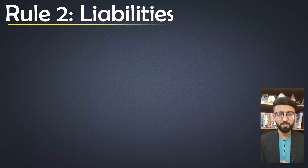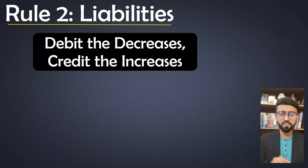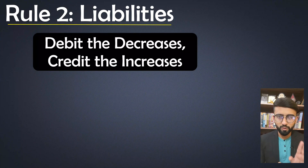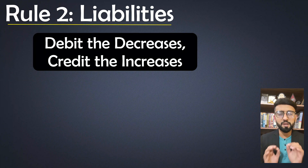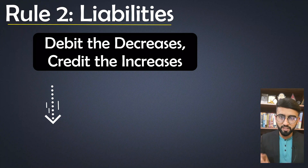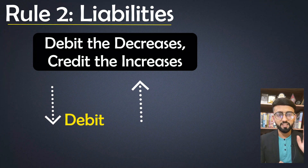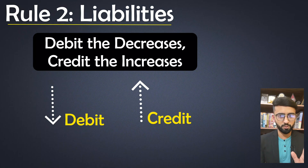Now let's move to the second rule, which is for liabilities. The rule for liabilities is: debit the decreases and credit the increases — exactly opposite to the assets rule. So whenever liabilities decrease, they are debited, and whenever they increase, they are credited.